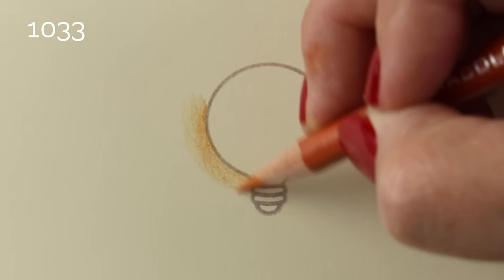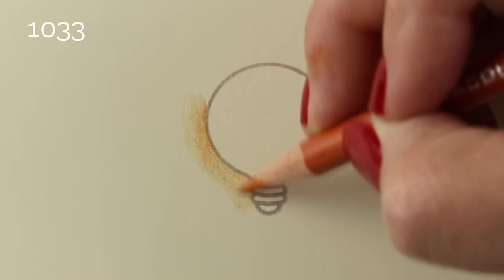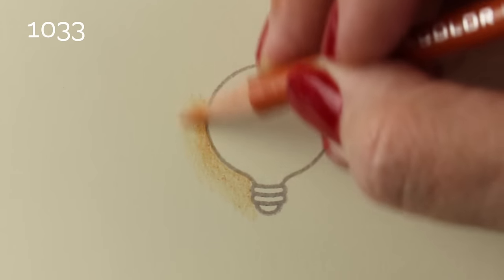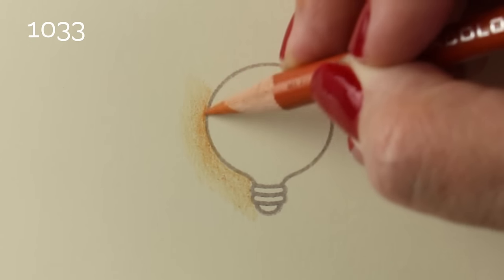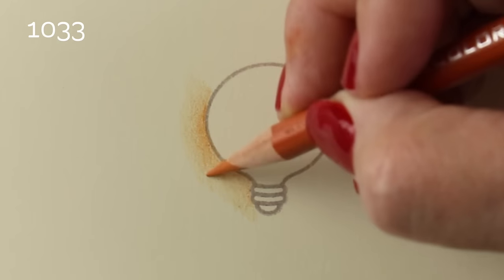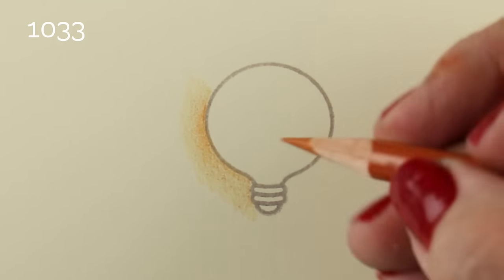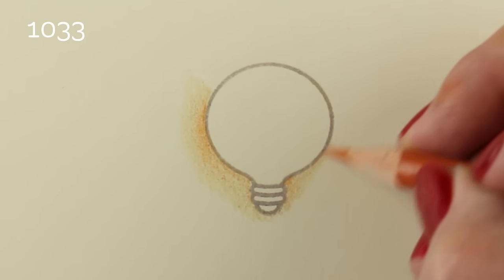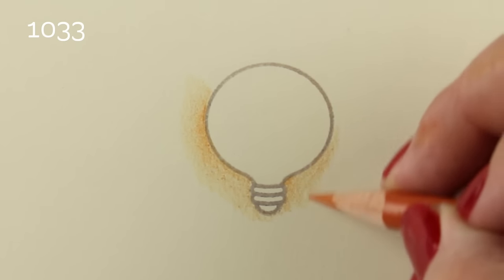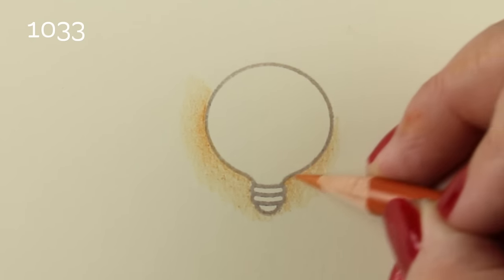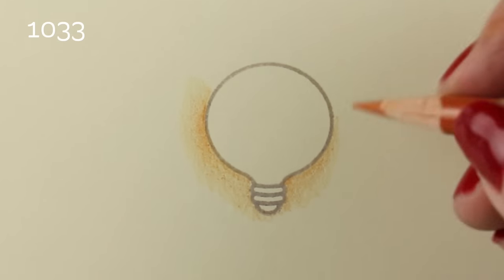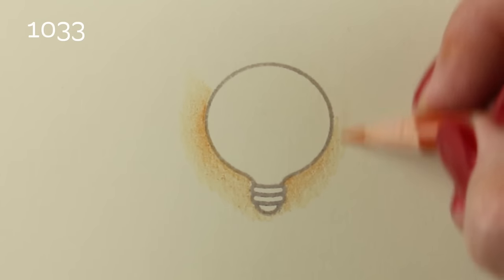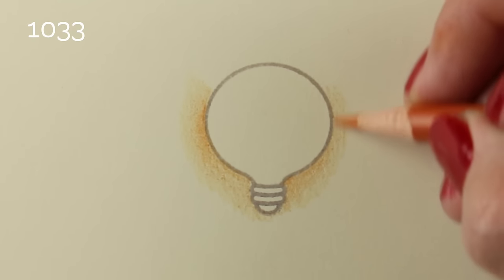I am going in with my Prismacolor pencils, and these Prismacolors are my favorite brand of regular old dry wax pencil. I've been using these since college. I'm going in with an orangey color to create sort of a halo around my light bulb, color 1033, and just making a really light halo around it.